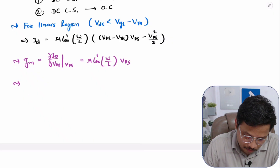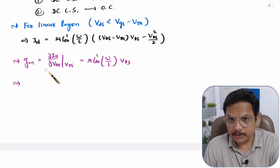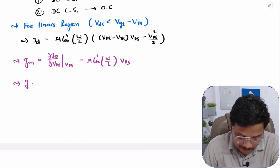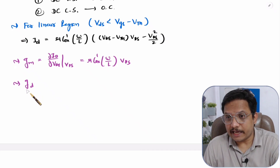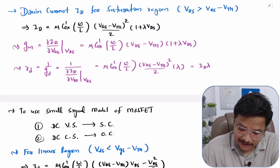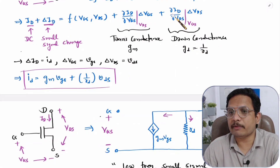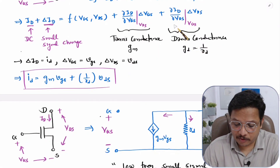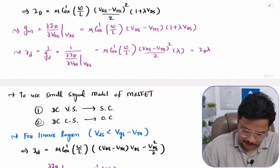To find drain resistance RD, first we need to find GD — the drain conductance. GD is the partial differentiation of drain current with respect to VDS, keeping VGS constant.